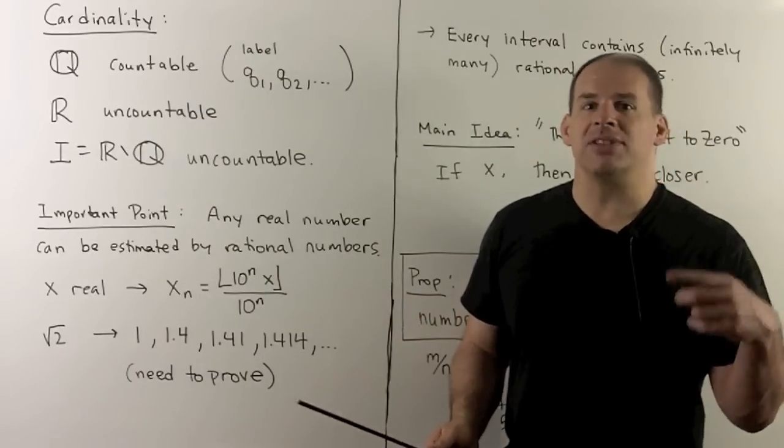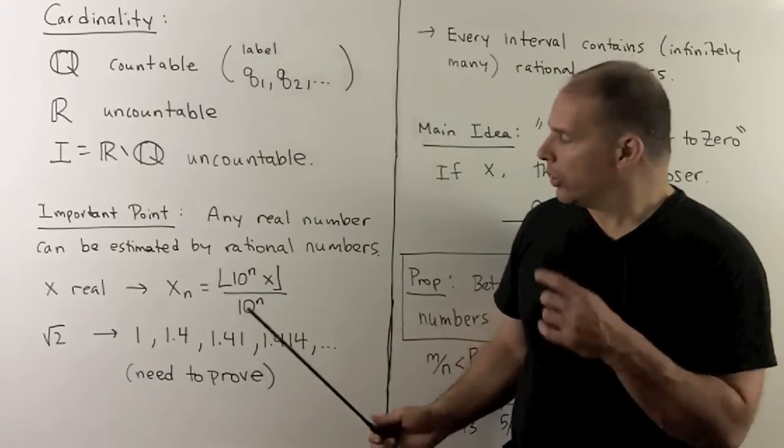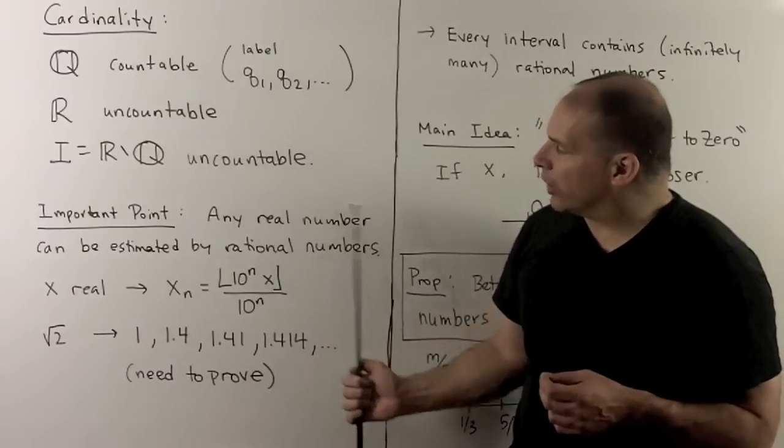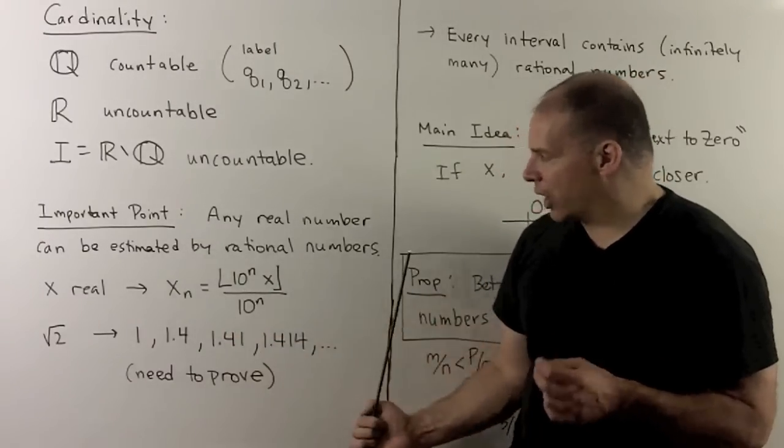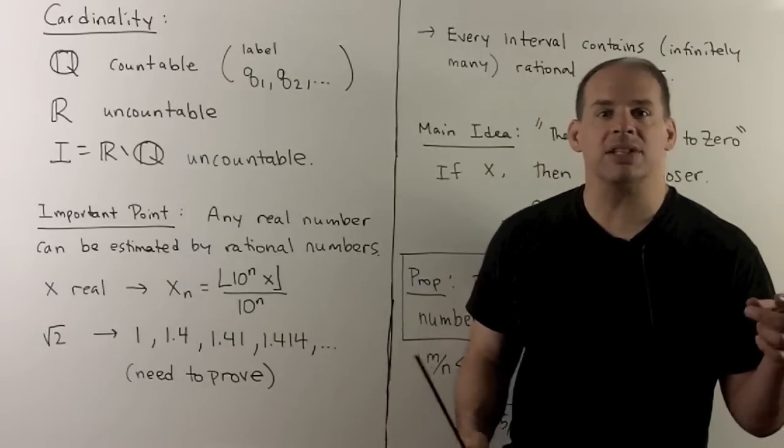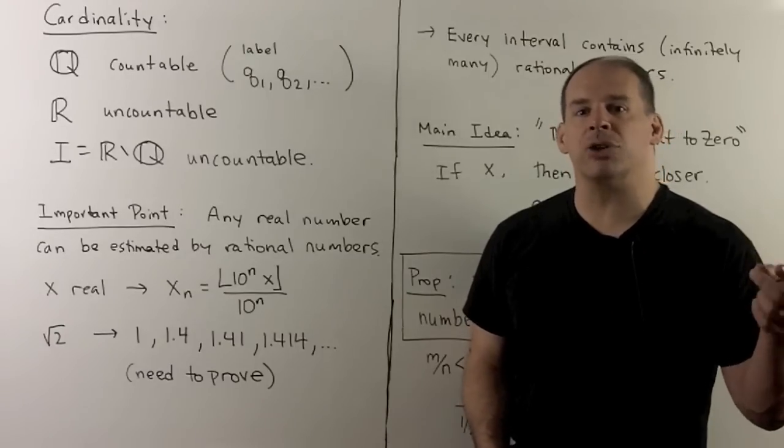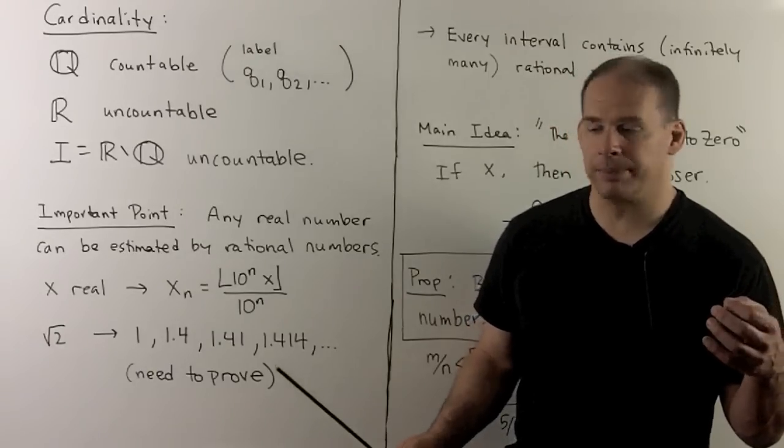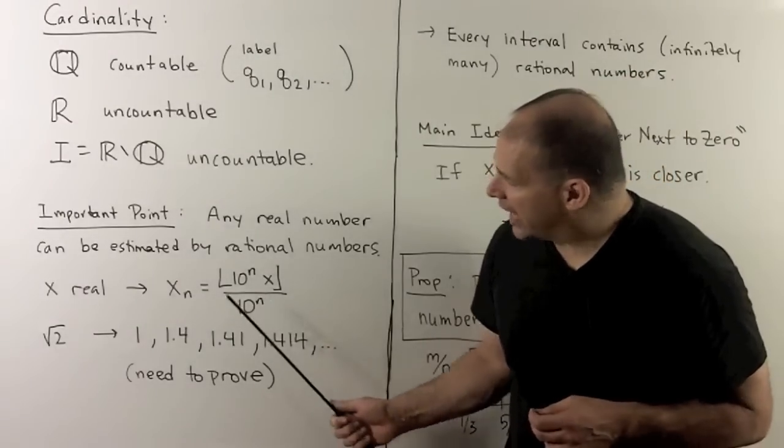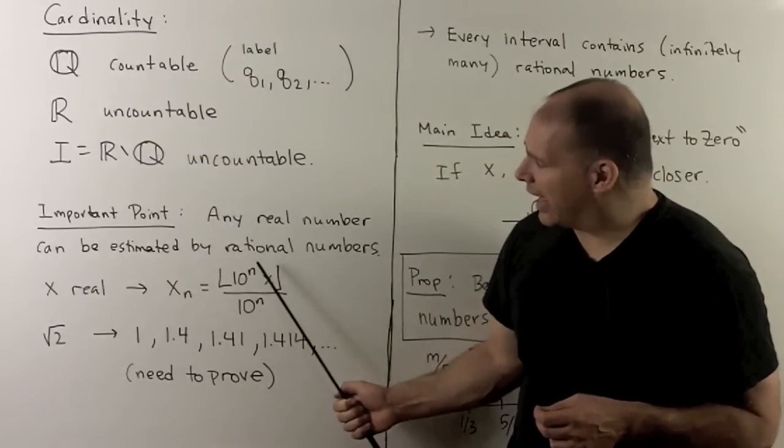What makes real analysis work is that the rationals are evenly distributed throughout the reals. Now, how do I make sense of that statement? First, we note, any real number can be estimated by rational numbers. So, what I mean by this, if I have x a real number, I can find a sequence of rational numbers that converges to x.